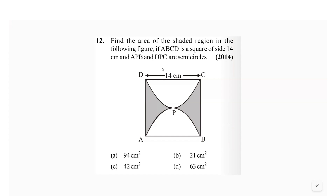So how would we find out what is the area of the shaded region? We can calculate it by calculating the area of the semicircles, and then we will calculate the area of the square, and then we subtract those areas from the area of the square.